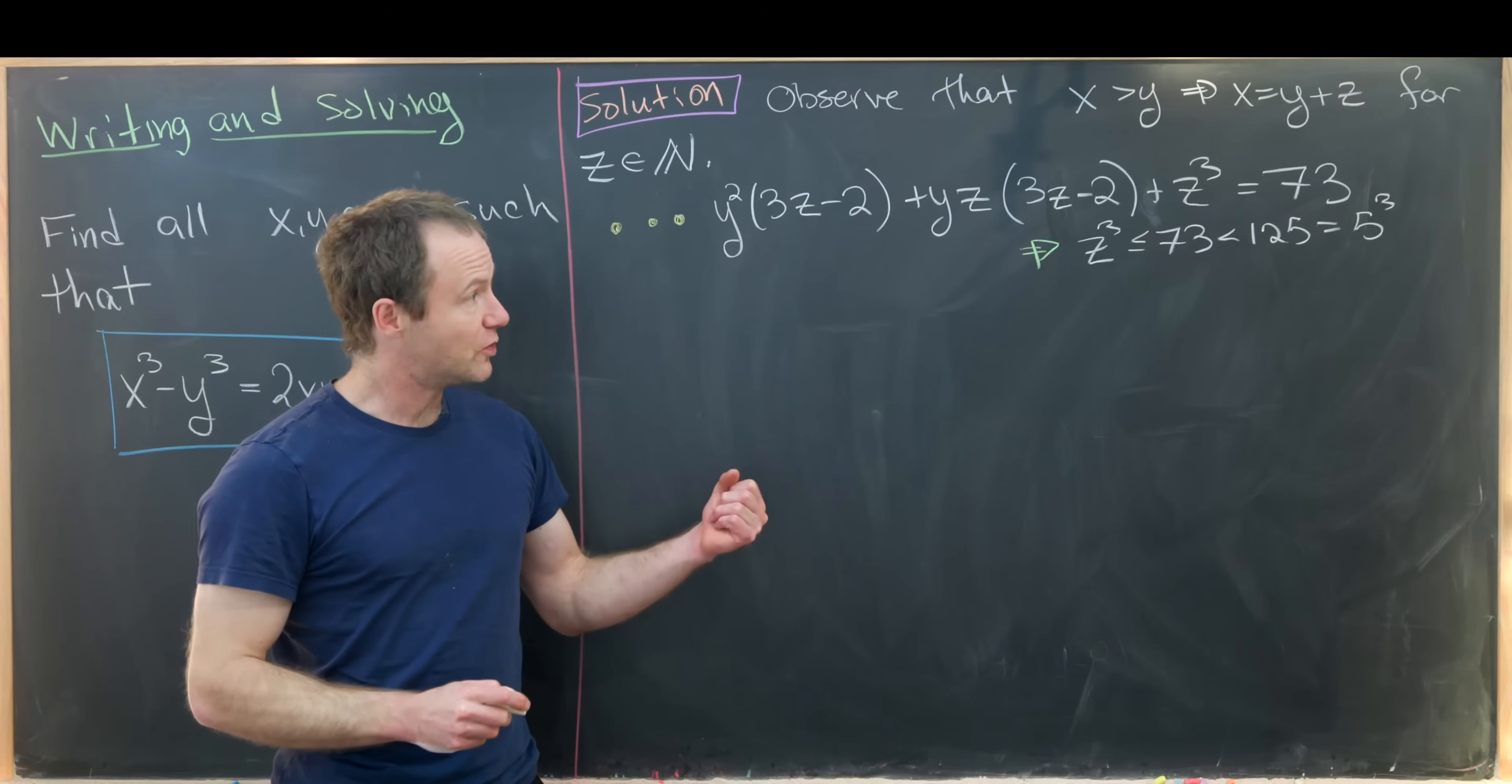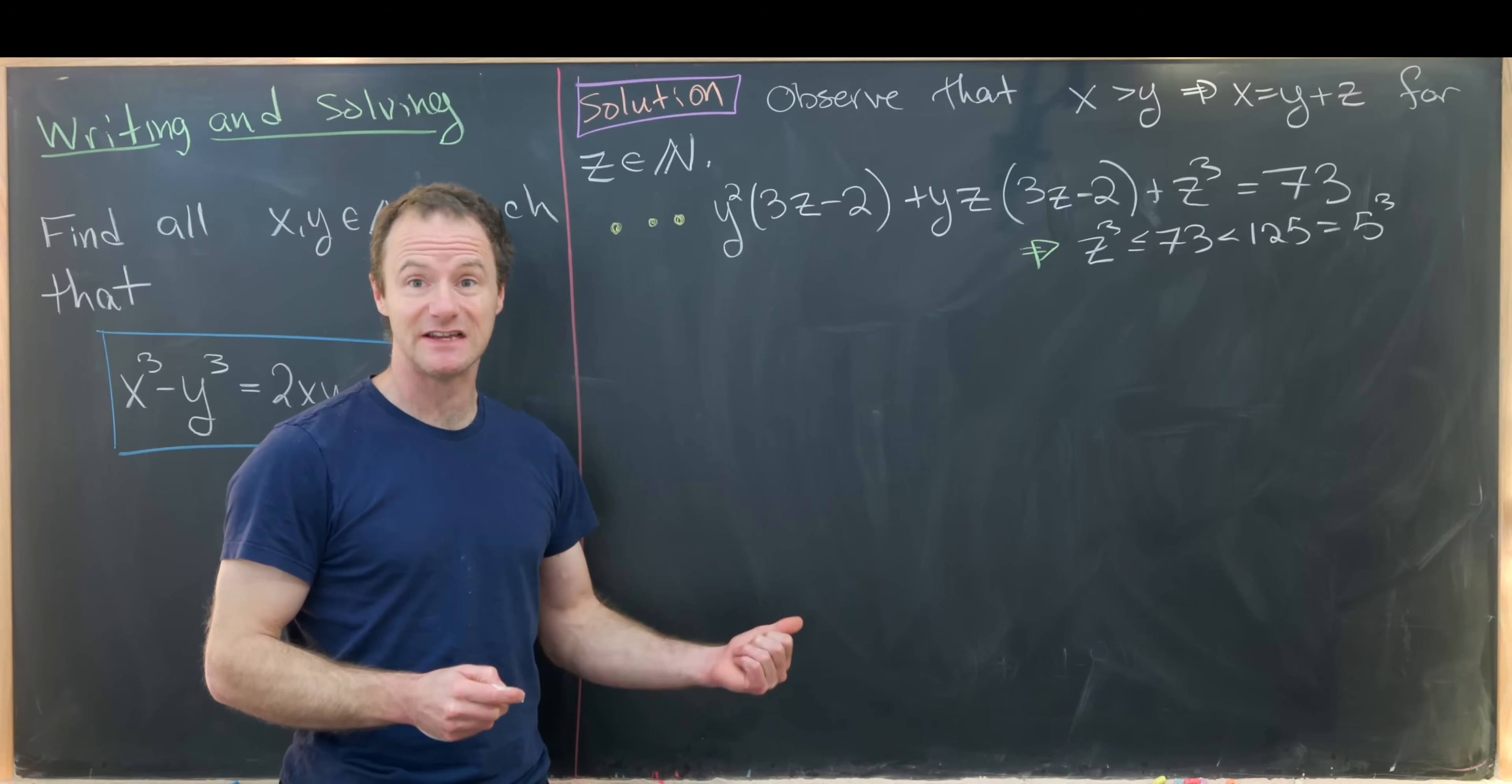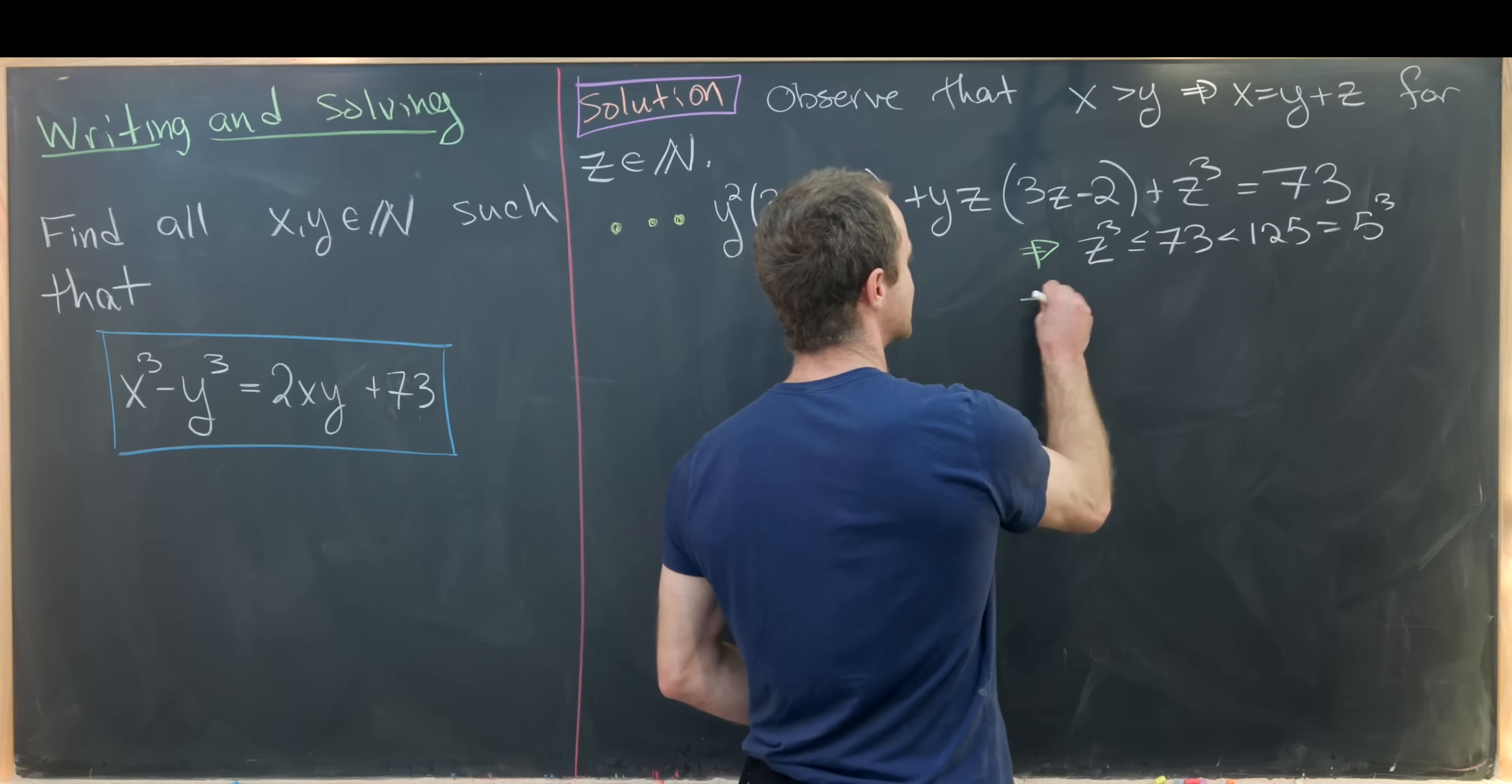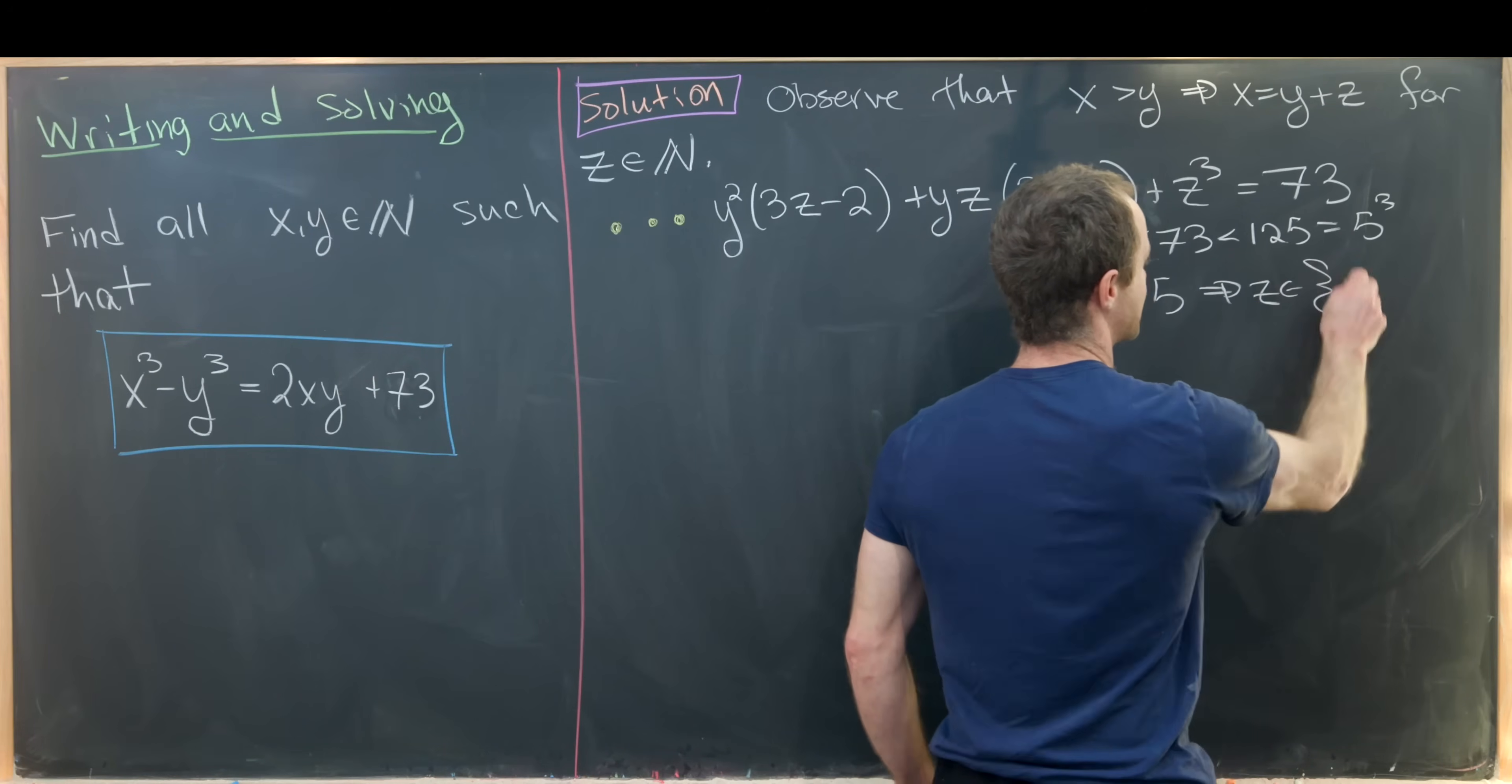Well why did I pick 125? Because that's the first cube which is larger than 73. The cube which is smaller than 73, or the first one which is smaller than 73, would be 64, that's 4 cubed.